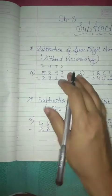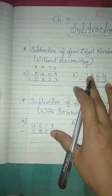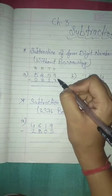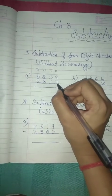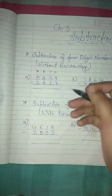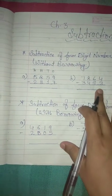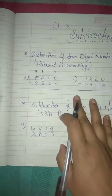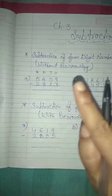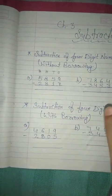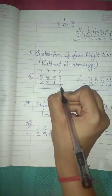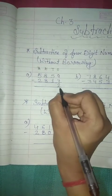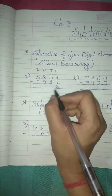So how to solve without borrowing? Let's start. Look at here — 9 minus 7. Tell me, what is 9 minus 7? Correct, 9 minus 7 is equal to 2. So write down 2 here.